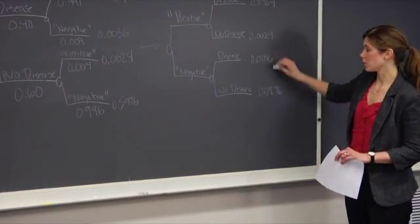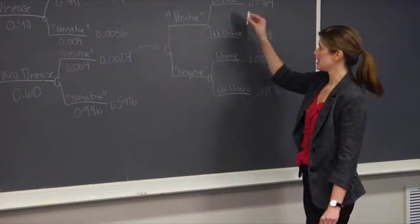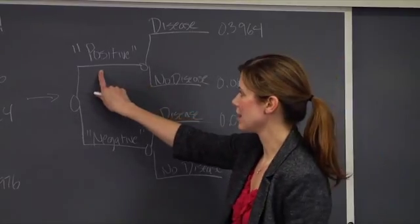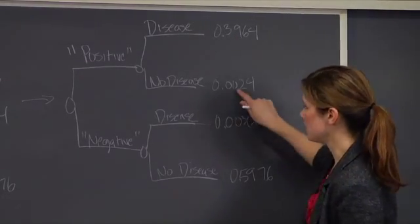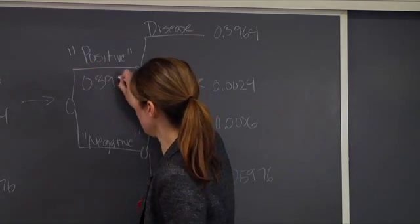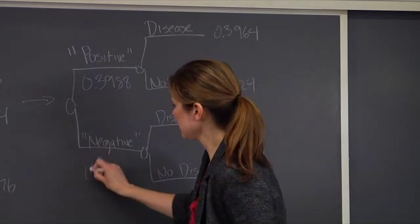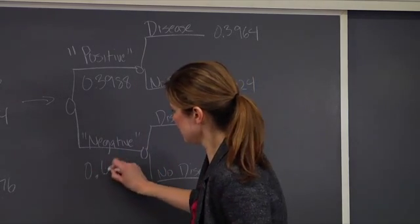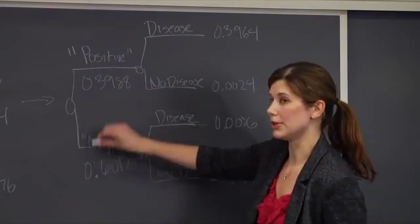So now I have the joint probabilities at the end of the tree, and I want to go through and fill out the rest of the tree. So in order to get this number, I just add these two numbers at the end of the tree, 0.3964 and 0.0024. This is equivalent to 0.3988. And similarly, the bottom branch is 0.6012. And I should again verify that these sum to 1, which they do.